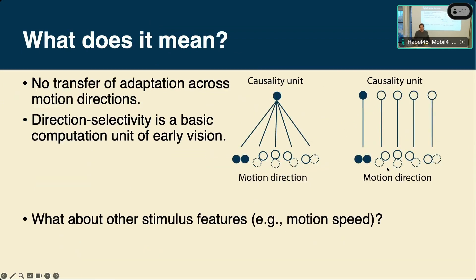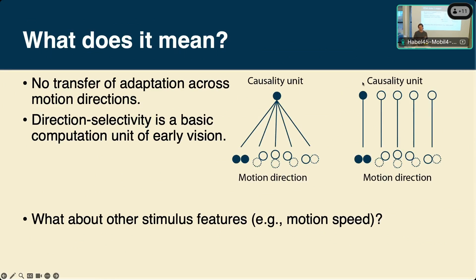Extracting the PSEs — the 50% point of the psychometric curves — for the five conditions, only the congruent launch direction condition stands out, showing the basic effect. This speaks for a model in which each motion-direction-specific launch is embedded in its own direction-selective causality unit, rather than a single shared causality unit across directions — and we don't see a transfer across directions.